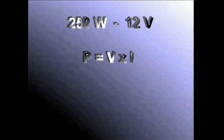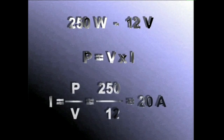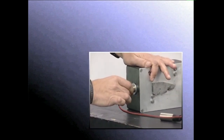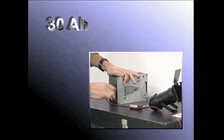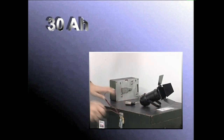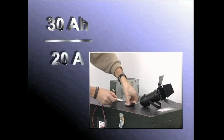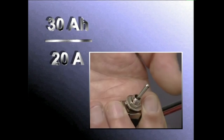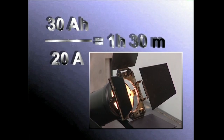Adibide baten bitartez ikusiko dugu. Lanpara bat daukagu 235 watekoa eta 12 boltekoa. Potentziaren formula erabiliz — P = V × I — intentsitatea kalkulatuko dugu: potentzia zati tentsioa. Horiekinda, 20 ampereko intentsitatea kontsumitzen duen lanpara daukagula ohartuko gara. Lanpara hori pizteko, orduko 30 ampere eman dezakeen bateria bat erabiliz, ordu eta erdi iraungo du piztuta.